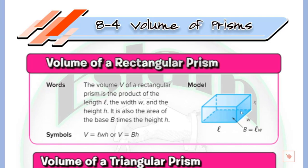Now, looking at the base — the base is in the shape of a rectangle, so we can say we have a rectangular prism. But if the base has a triangle, we can say we have a triangular prism. So the name of the prism depends on the name of its base.